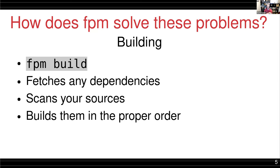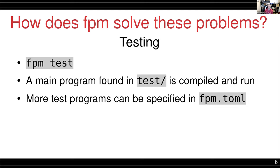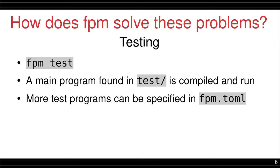FPM looks at all the use statements and module statements in your source code and determines the correct build order so that all module dependencies are respected — it does all of that automatically. No longer manually maintaining Makefiles. For testing, the basic idea is that a main program found in the test folder is automatically compiled and run when you type fpm test. Similarly, a program in the app folder is run with fpm run.